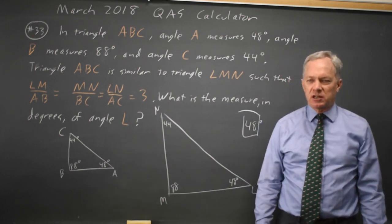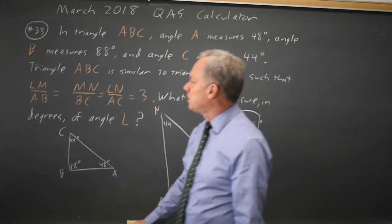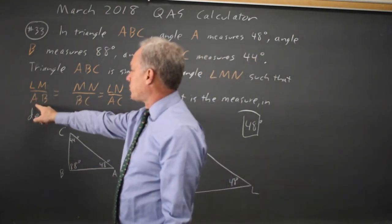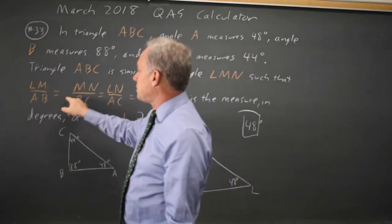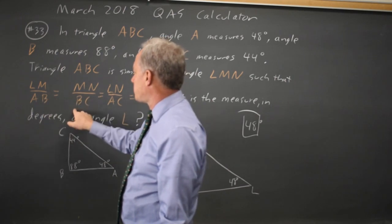This is all about identifying the corresponding sides. And LM over AB, MN over BC tells you that M corresponds with B.